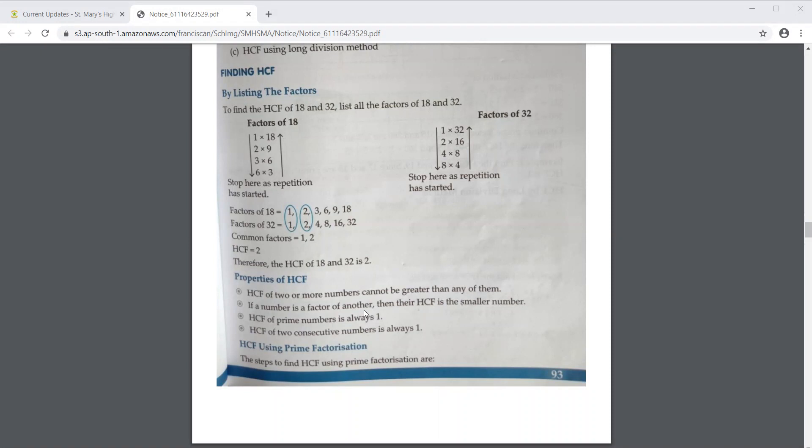5 is a prime number, its factors are 5 and 1. 7 is a prime number, its factors are 7 and 1. So what is the common number in each one? 1. So HCF of prime numbers will always be 1.